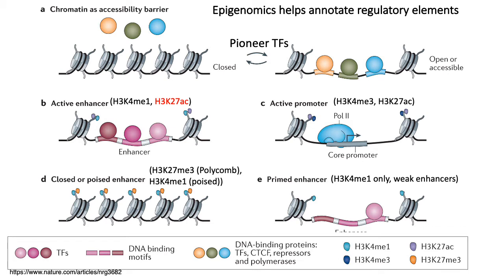The important point is that nucleosome positioning is highly dynamic. Transitioning between open and closed chromatin typically happens through the action of chromatin remodelers and transcription factors. For example, pioneer transcription factors are defined as transcription factors that make the initial binding and open up the chromatin, making it available for other factors to come in and bind.